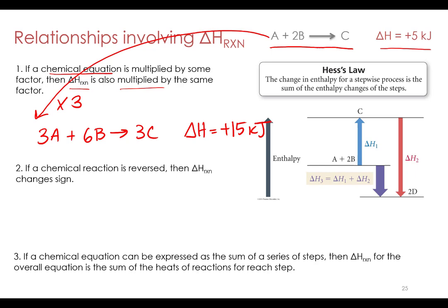That should make sense since the enthalpy change is stoichiometric — meaning if it takes 5 kilojoules to produce 1 mole of C, it would take 15 kilojoules to produce 3 moles of C, because that's 3 times the amount of material.